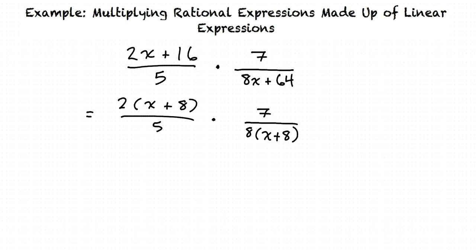We can now cancel x plus 8 and simplify the 2 and 8 to 1 and 4. The result is 1 over 5 times 7 over 4. After multiplying this together, the final answer is 7 over 20.